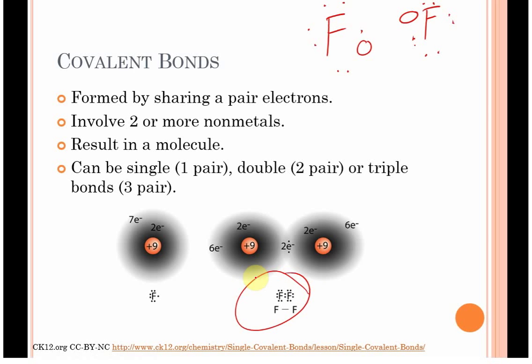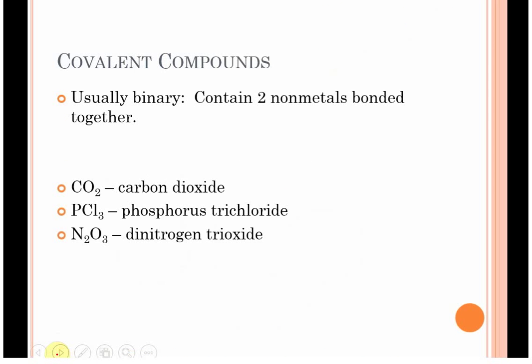So that shared pair of electrons gives us a single bond. If you have two pairs being shared, you have a double bond. Three pairs being shared, you have a triple bond. Now in general, we talk about it in terms of sharing. It just means that they both have ownership. We'll get to polar or unequal sharing later this semester.